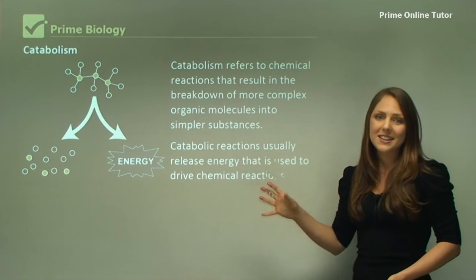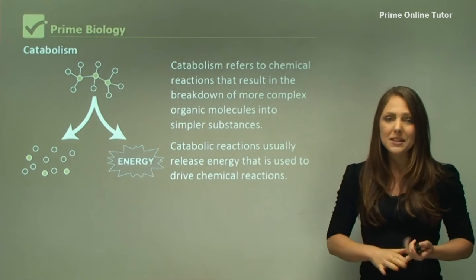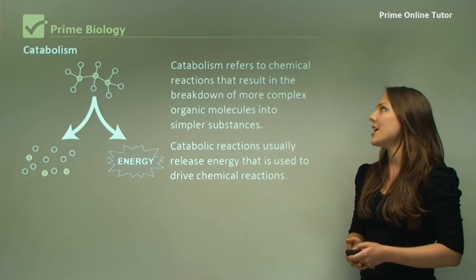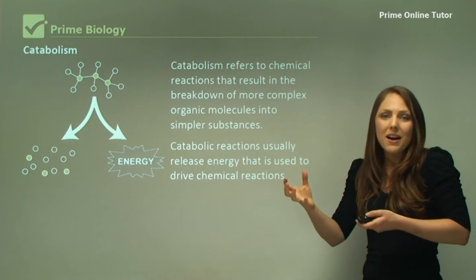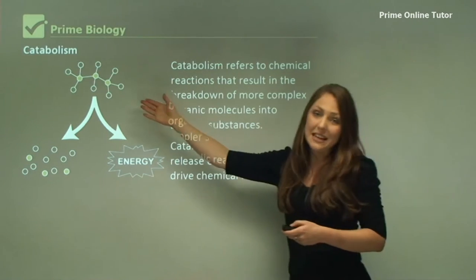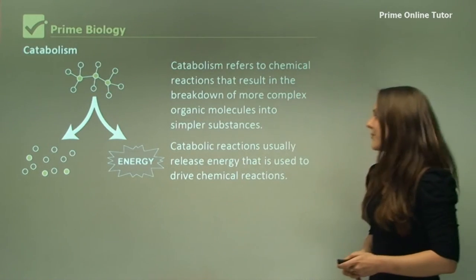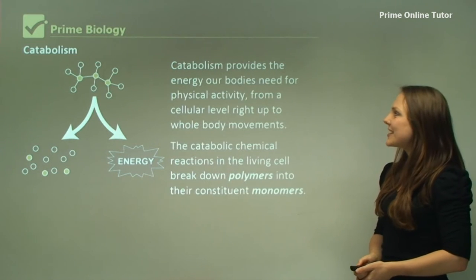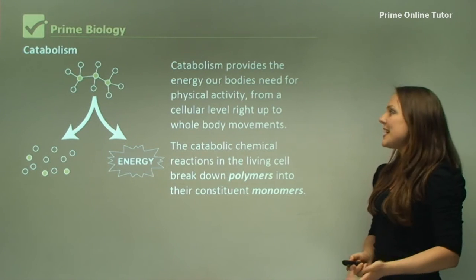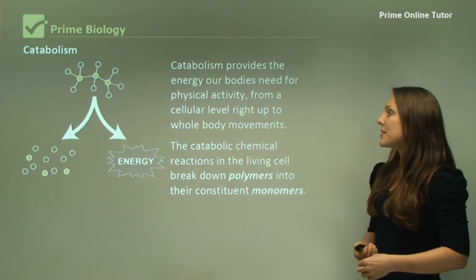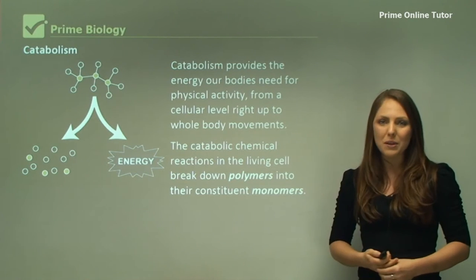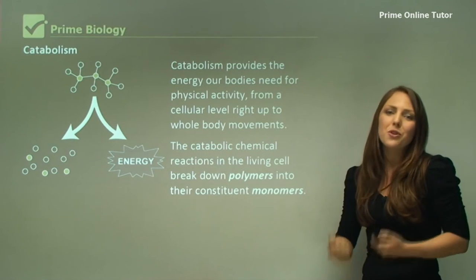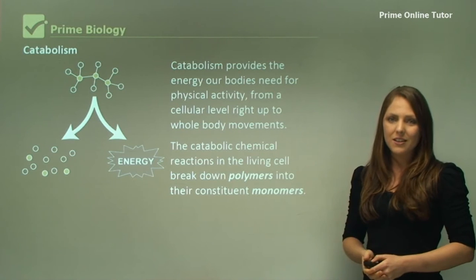Now talking about catabolism. In both processes — anabolism and catabolism — you do use energy in both. Catabolism refers to the chemical reactions that result in breaking down a polymer into a monomer, and in the process you can actually create energy. Catabolism provides the energy that our bodies need for physical activity, from a cellular level right up to whole body movement. So when you use your muscles, you're using the sugar in your muscles for energy, breaking it down for you to use.